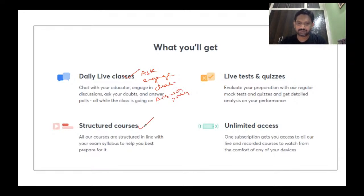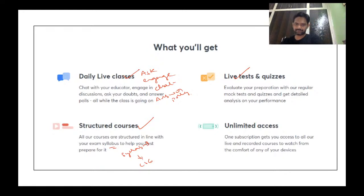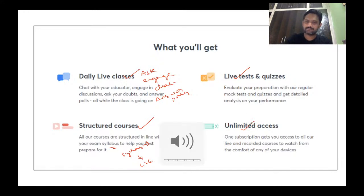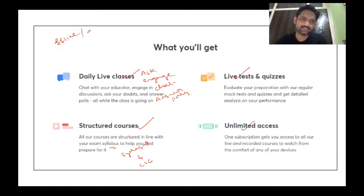There are structured courses on the learning app that comprehensively deal with the entire syllabus of the civil services examination. India's top educators conduct live tests and quizzes at regular intervals, which are very useful for understanding your preparation level. You also have unlimited access to An Academy's content and can watch videos any number of times without restriction, at the time and place of your choice. These advantages are not available in various offline or online coaching institutions.